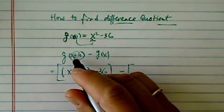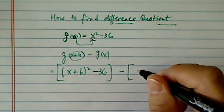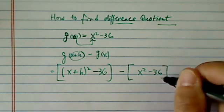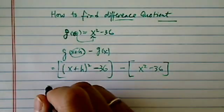That's the g of x plus h minus the function itself, which is this one. And now all we have to do is just simplify.